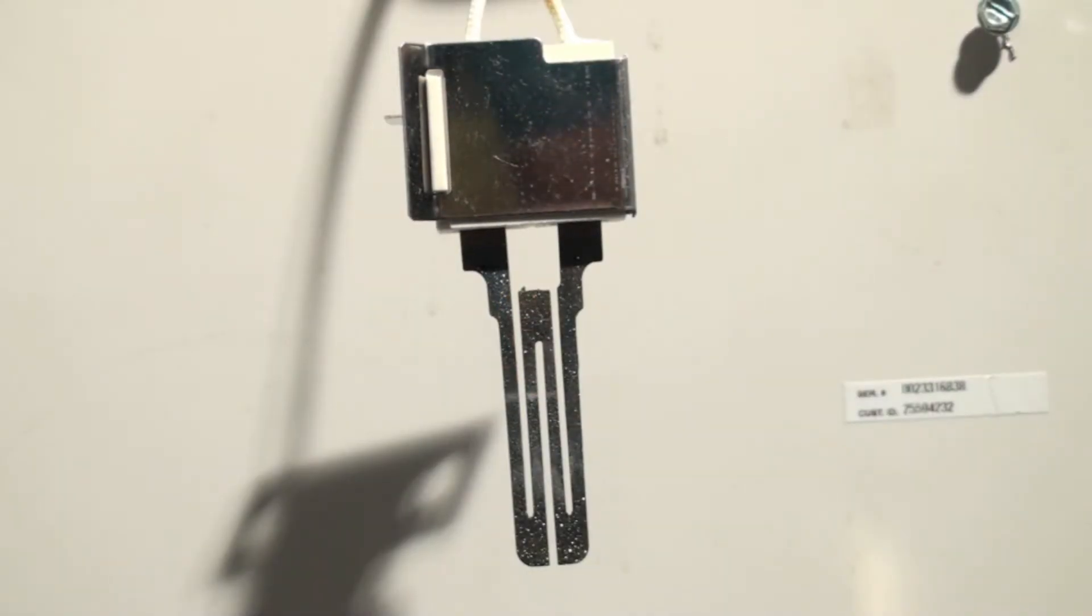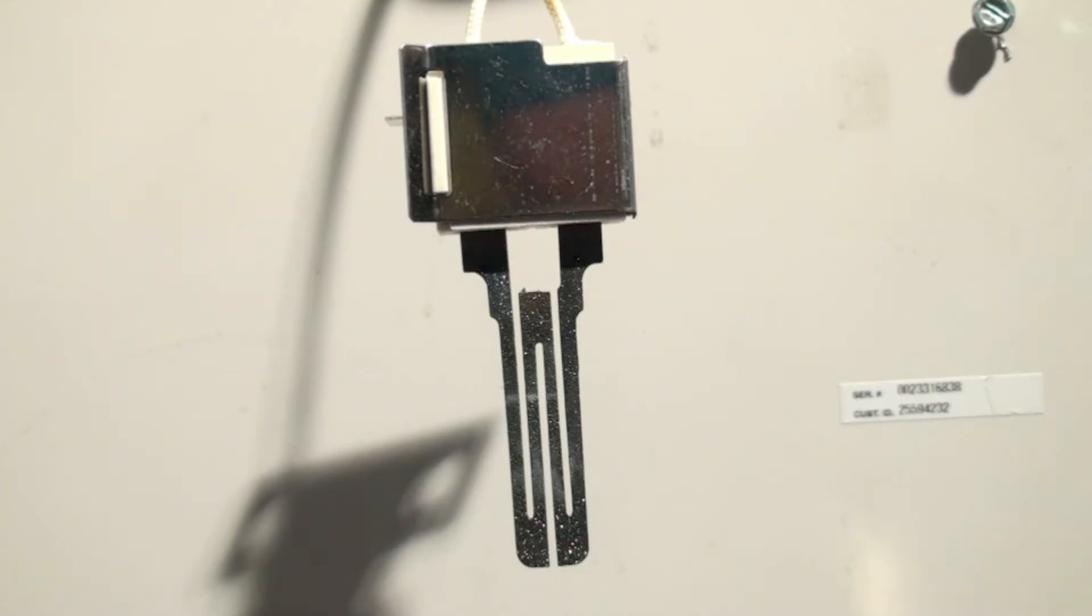This is a silicon carbide hot surface igniter. This is what it looks like when it's out of the furnace. We've got it mounted in the furnace and we're going to show you what it looks like when it's on and how to service it.